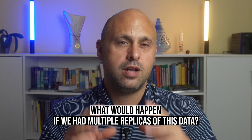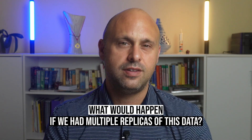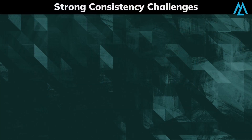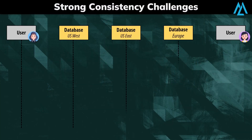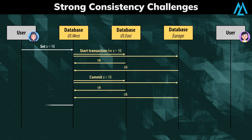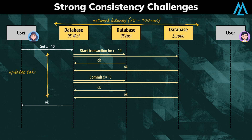But what would happen if we had multiple replicas of this data distributed across the globe? Achieving strong consistency in a distributed system is way more complicated because updates must be replicated, which introduces several challenges. The first is performance. Replicating data over the network takes time. To guarantee strong consistency, an update should be confirmed only after data is successfully replicated to all nodes. This makes updates slower.